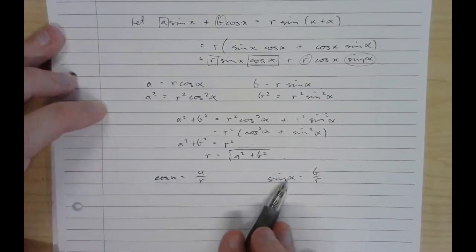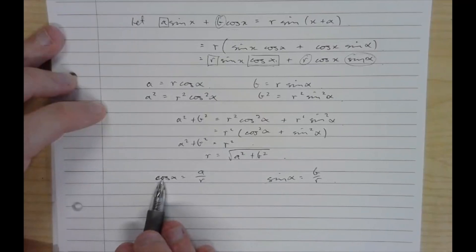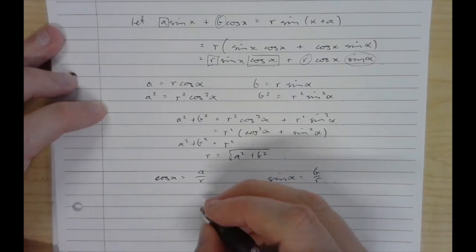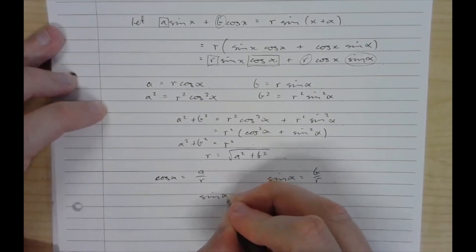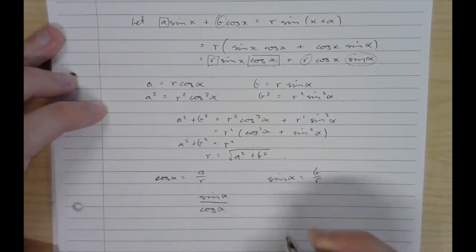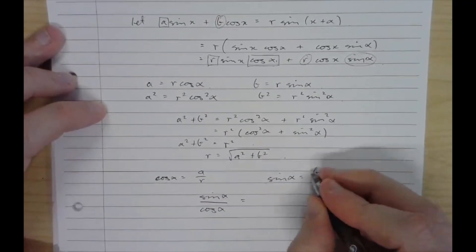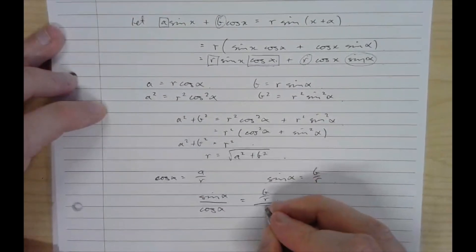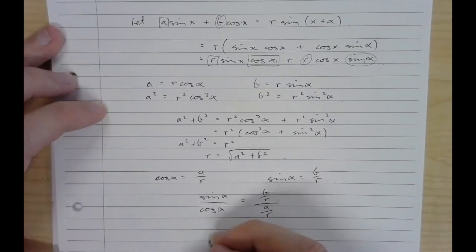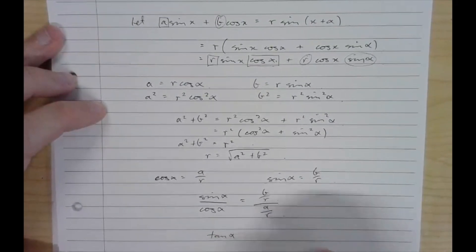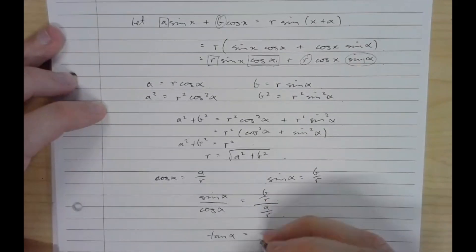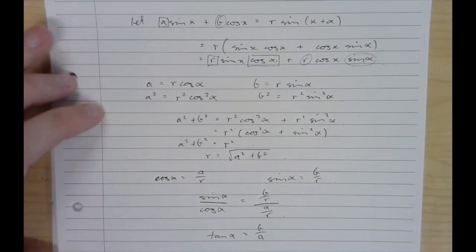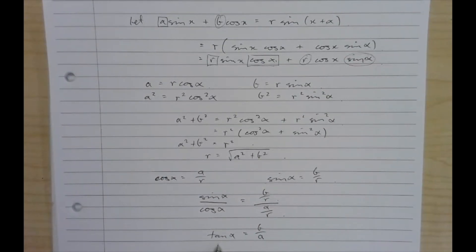If I now have these two equations, if I do this equation with sine divided by cosine, I end up with tan. So sine alpha over cos alpha equals B over R over A over R. That is tan alpha equals, and the R's cancelled, so it's B over A. So I can get alpha by just doing inverse tan.